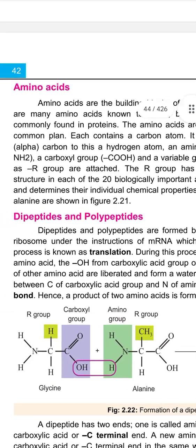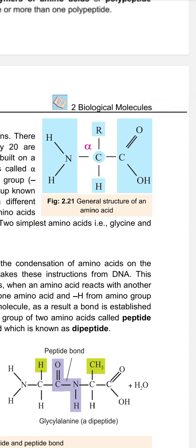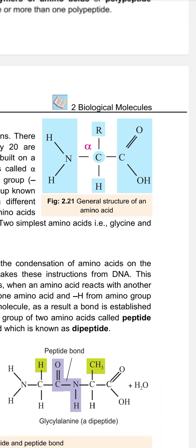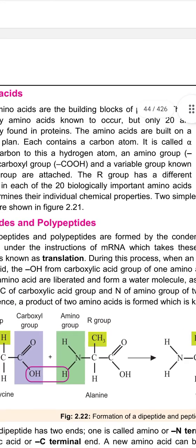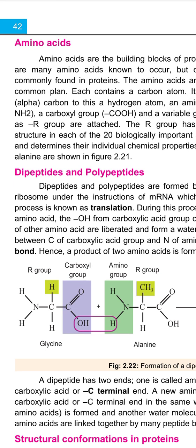Two of the simplest amino acids, glycine and alanine, are shown in figure 2.21. In that figure you can see the general structure of amino acids: the central alpha carbon, with a hydrogen atom on one side, a carboxyl group (COOH) on another side, an amino group (NH2) on another, and the R group.